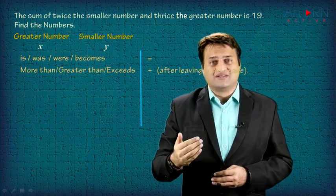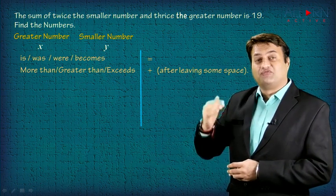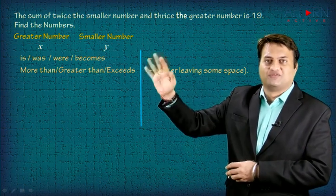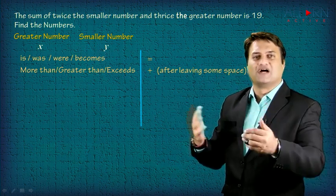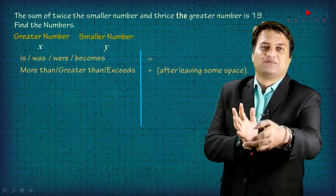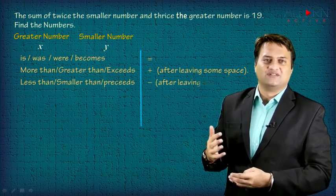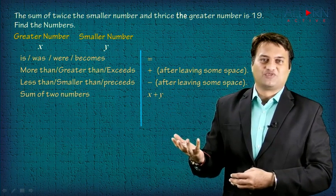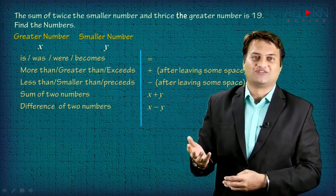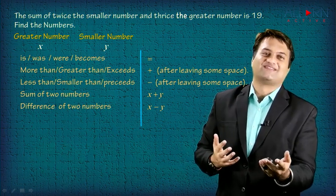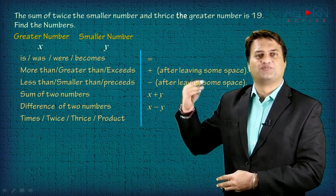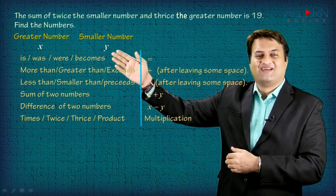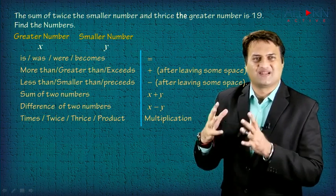'More than', 'greater than', 'exceeds' — you need to replace with a plus, but after leaving some space. This is generally after the equal to sign on the right-hand side; after leaving some space, put a plus whenever it is 'more than', 'greater than', 'exceeds'. Similarly, 'less than', 'smaller than', 'precedes' — after leaving some space, put a minus sign. Sum of two numbers is x plus y; difference of two numbers is x minus y; ratio of two numbers is x upon y. 'Times', 'twice', 'thrice', 'product' indicates multiplication — so 'twice the smaller number' is 2y, and 'thrice the greater number' is 3x.